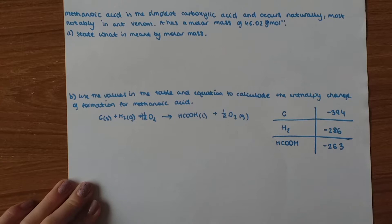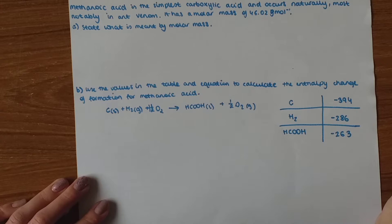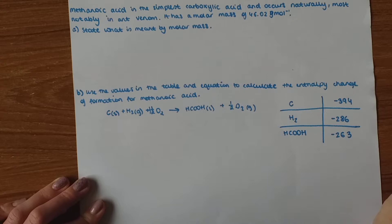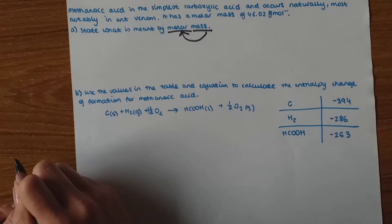And this is our last but not least question. Methanoic acid is the simplest carboxylic acid and occurs naturally, most notably in ant venom. It has a molar mass of 46.02 kilojoule mole minus one. State what is meant by molar mass. So molar mass means the mass of one mole of a substance, of a compound.